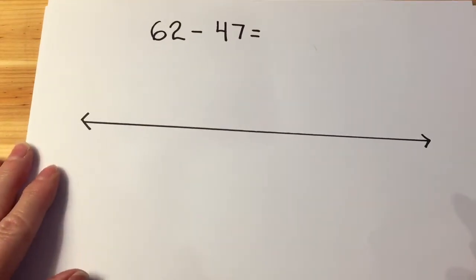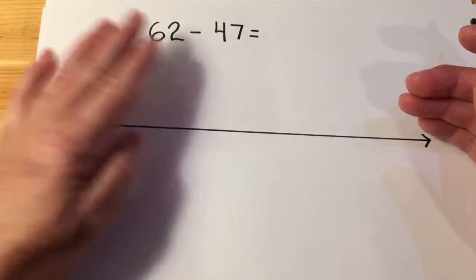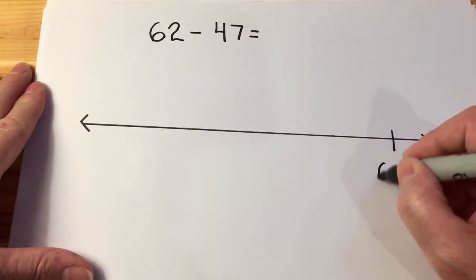Let's look at a subtraction situation. When I'm subtracting, I'm starting with my largest amount and I'm getting smaller. So I start here at 62.